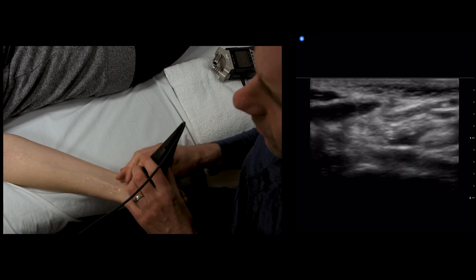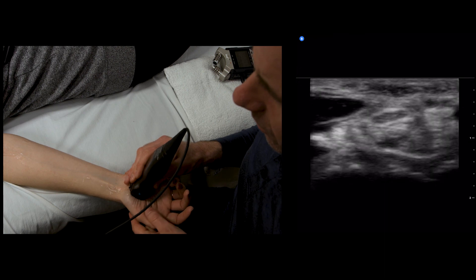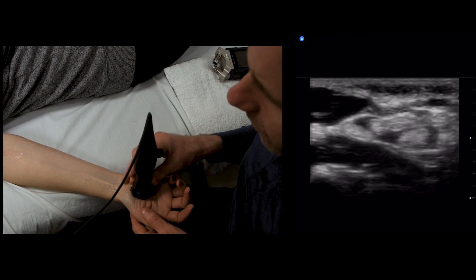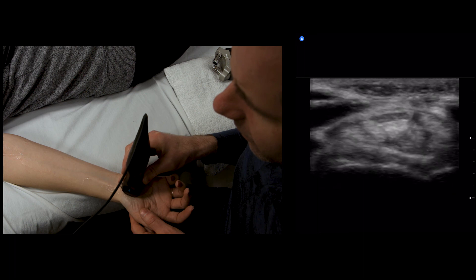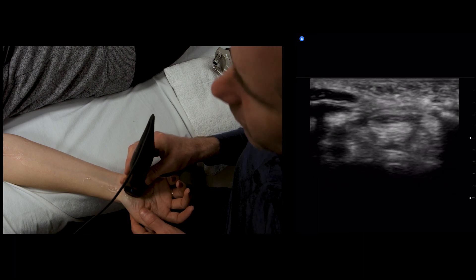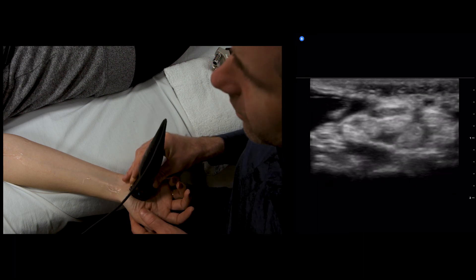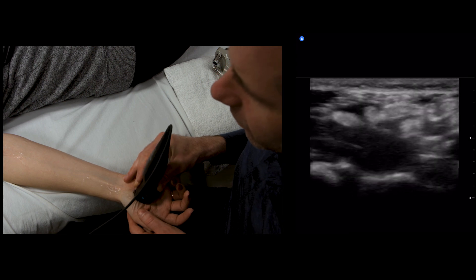If I rotate it here and flex the wrist a little bit, after it exits the carpal tunnel—here's the edge of the carpal tunnel—after we exit, it divides into its digital branches.